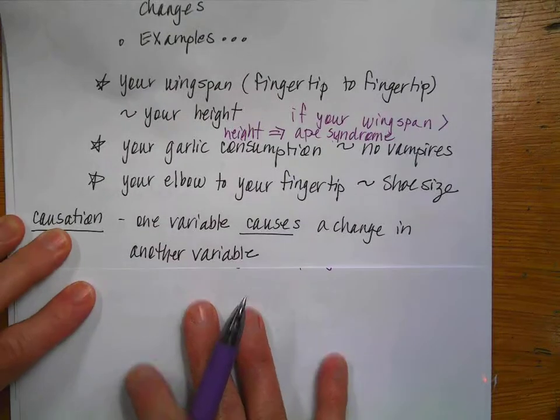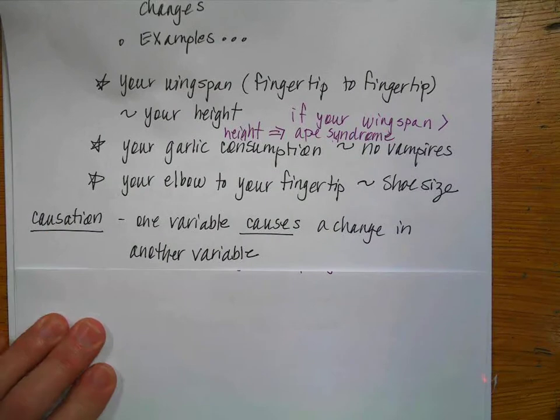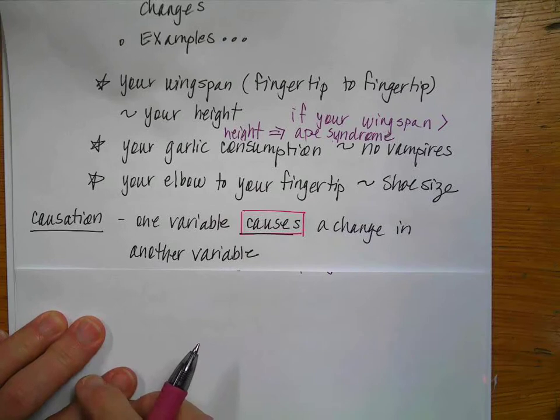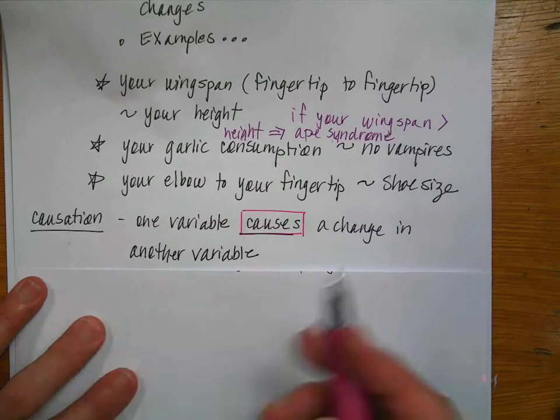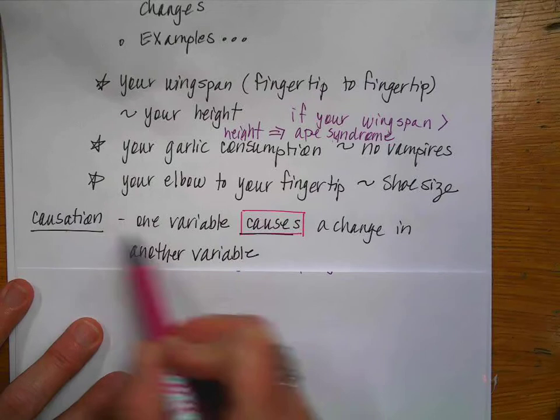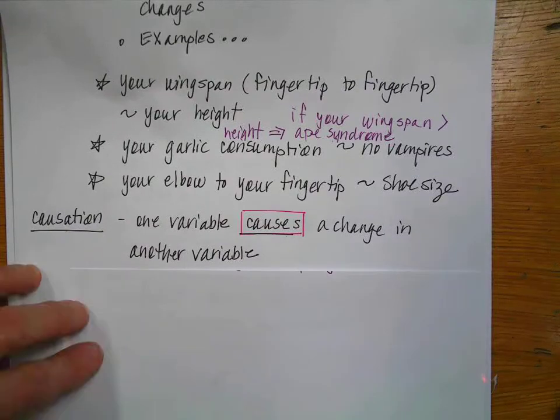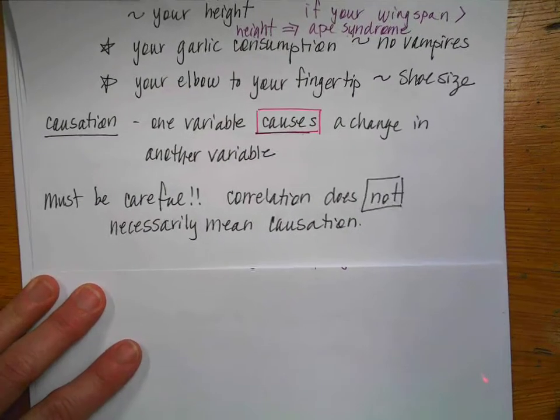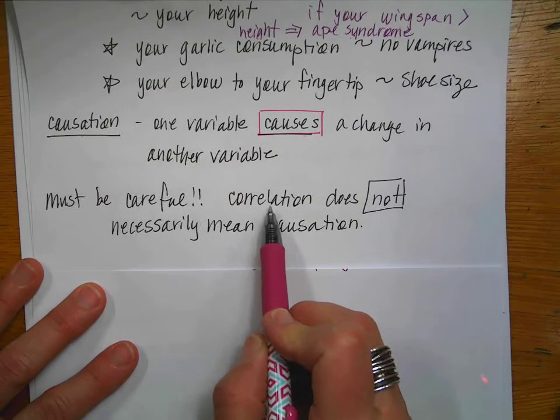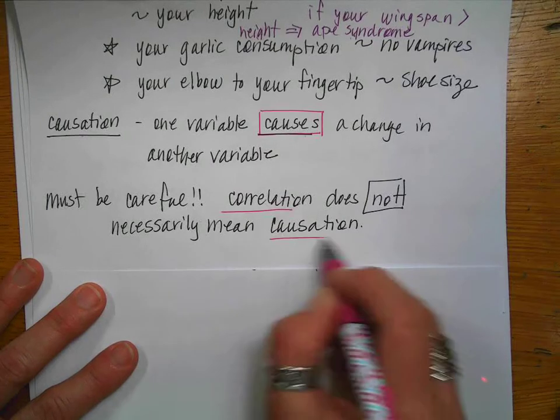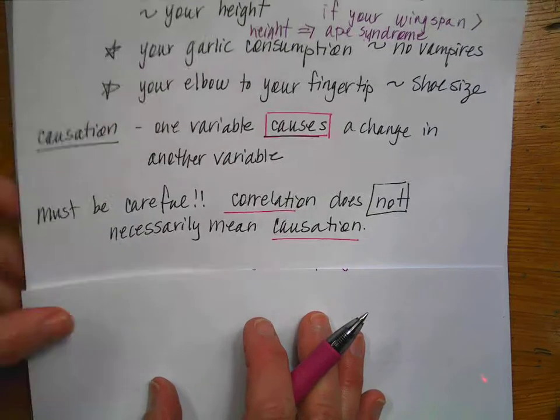The next thing that we want to talk about is causation. Causation is different than correlation, because causation says one variable causes a change in another variable. So sometimes we like to make relationships between correlation and causation, but you need to be very careful, because causation means that one variable causes a change.